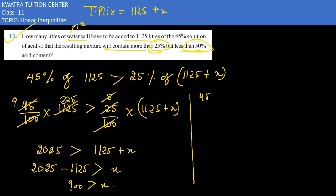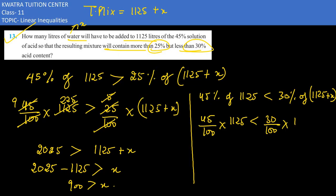Second situation. 45% of 1125 is less than 30% of the total mixture. That's 1125 plus x would be the 45% of 1125. Right side 30 over 100 into 1125 plus x.